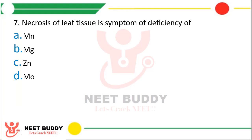Question 7: Necrosis of leaf tissue is a symptom of deficiency of? Manganese, magnesium, zinc, or molybdenum. The correct answer is Option B, magnesium. Magnesium deficiency results in necrosis of leaf tissue.